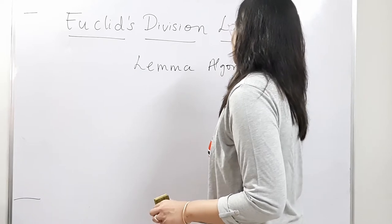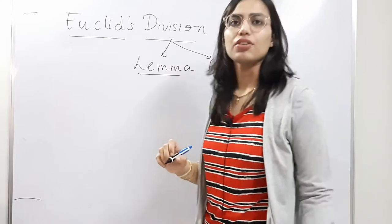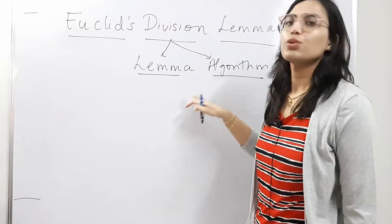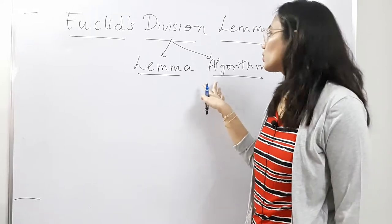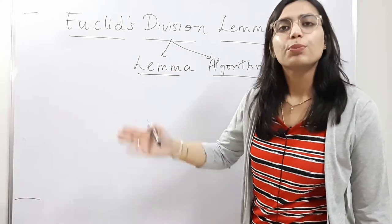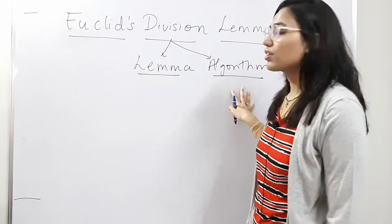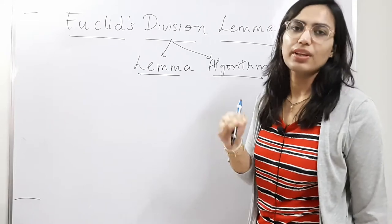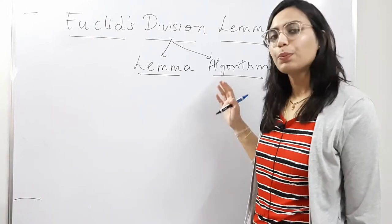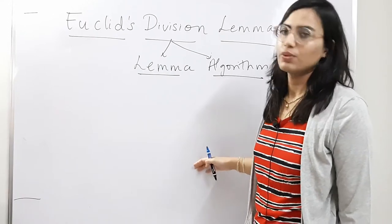There are two things here: one is Euclid's division lemma and one is Euclid's division algorithm. In this video we will encounter Euclid's division lemma; in the next video we will see Euclid's division algorithm. These two are different. A lemma is a proven statement that is used to prove another statement. An algorithm is a step-by-step procedure that we follow so that we get one expected or desired result, with well-defined steps. That is the algorithm.